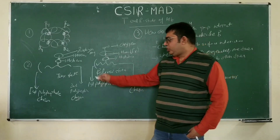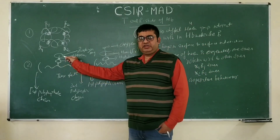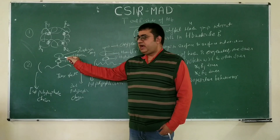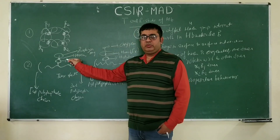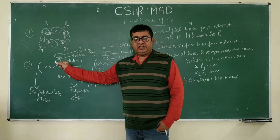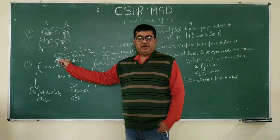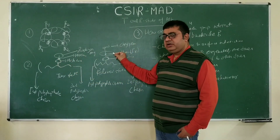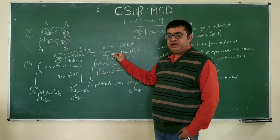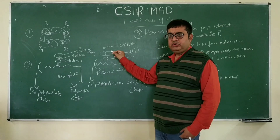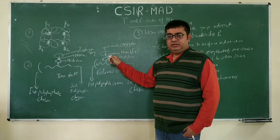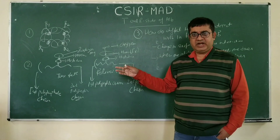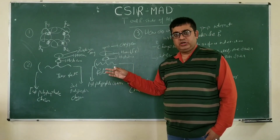When the polypeptide chain doesn't bind to oxygen, it is called the deoxygenated form of hemoglobin. This deoxygenated form of hemoglobin is the T state. When oxygen binds to this T state, the deoxygenated hemoglobin turns into the relaxed state, or R state, and in the relaxed state it is much easier to bind to the oxygen molecule.